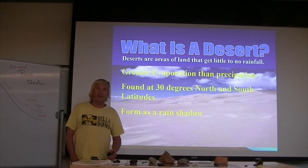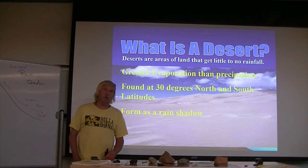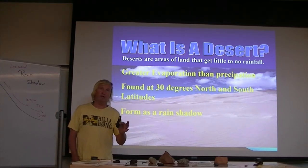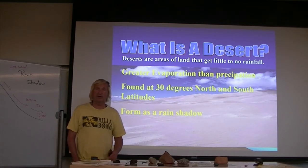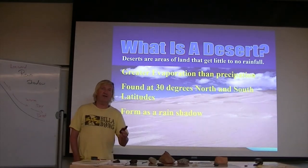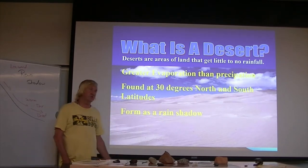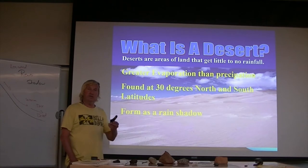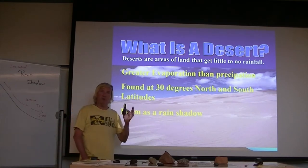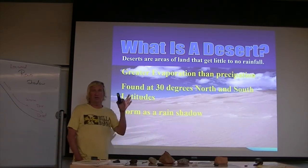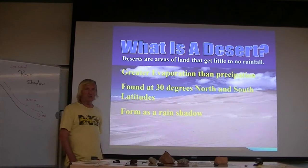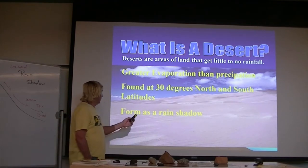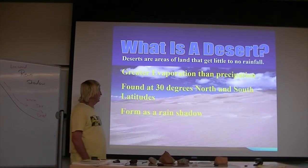Mountain ranges can create what's called a rain shadow — they actually block the rain. A good example in our part of the world is Nevada. Las Vegas and much of Nevada are rain shadow deserts. Nevada is a little too far north to be a true desert; it's part of the Great Basin Desert, and it exists because the Sierra Nevada Mountains in California block precipitation from reaching Nevada.